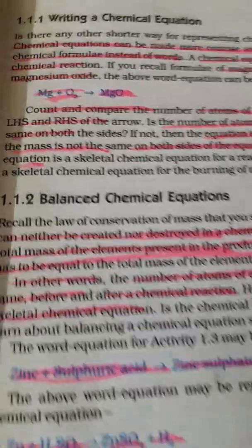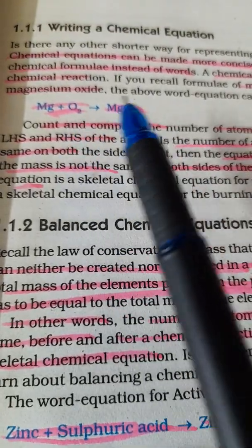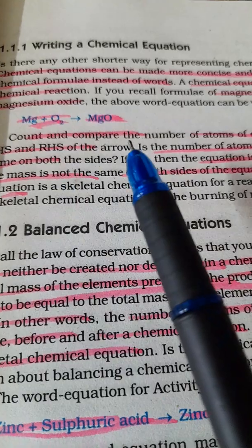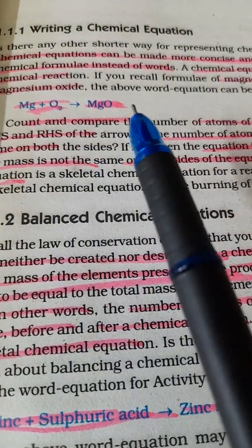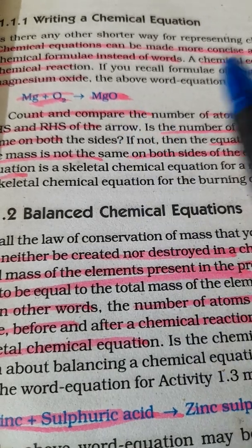A chemical equation represents a chemical reaction. You have already learnt the formulas of elements. Magnesium is Mg, oxygen is O2. The word equation we learnt previously you can write in the form of symbols, which is very simple: Mg plus O2 reacts to give MgO.